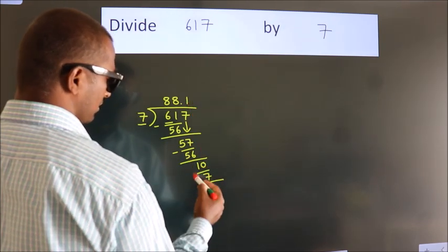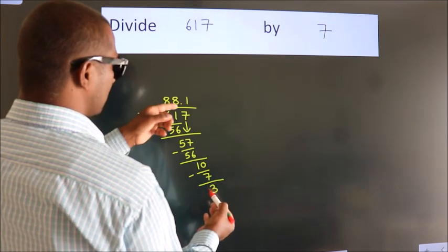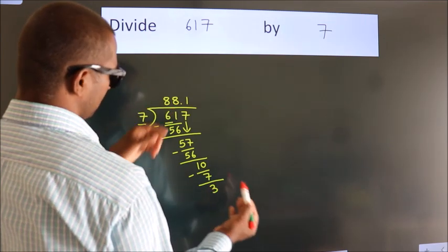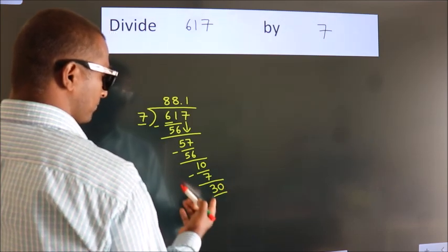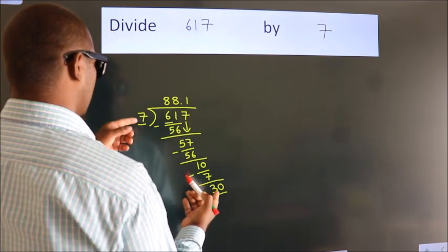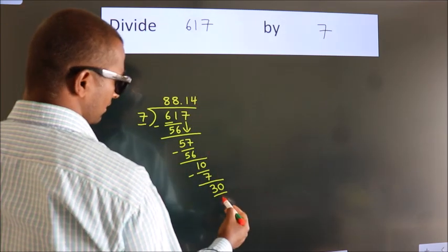Now we subtract. We get 3. After this, we already have the decimal, so directly take 0. So, 30. A number close to 30 in the 7 table is 7×4=28.